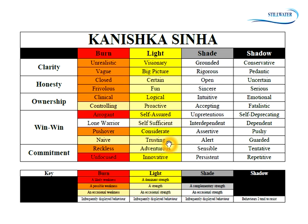Any strength can go too far and become a weakness — that's what we have in the burn column. The darker the color, the more likely it is to be a weakness. Dark red ones are likely weaknesses, orange ones are possible weaknesses, and light orange ones are occasional weaknesses. For example, self-assuredness is a strength — I'm quite comfortable telling people what I'm good at and how I can help. But in some situations, that will be perceived as arrogance.